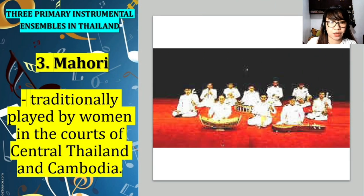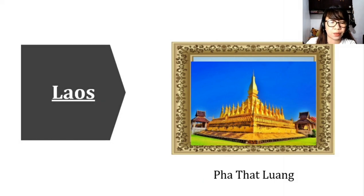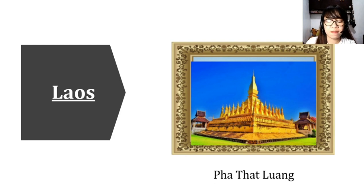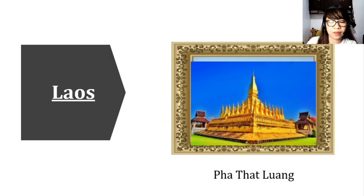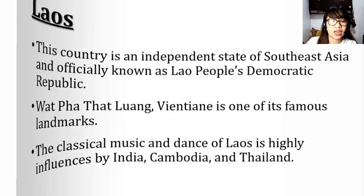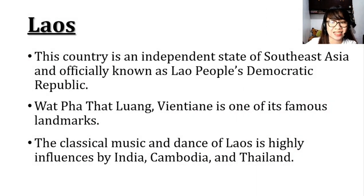So again, the three primary instrumental ensembles in Thailand are the Piphat, Khruang Sai, and Mahori. Now let's move on to Laos. Laos has Pha That Luang as one of its famous landmarks — a very popular Buddhist gold-plated temple. Every year there is the Pha That Luang Festival, which many people attend. Laos is officially known as the Lao People's Democratic Republic.